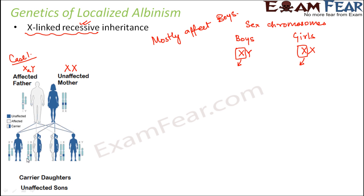What are the possibilities for children? The daughters would be X-A, X — carrier but not affected. The sons would be X, Y — not affected at all. So for an X-linked recessive disease, if the father is affected and the mother is not affected, the sons will never be affected. This is because the disease is present on the father's X chromosome and the father never contributes his X chromosome to sons — sons get their X chromosome from the mother.